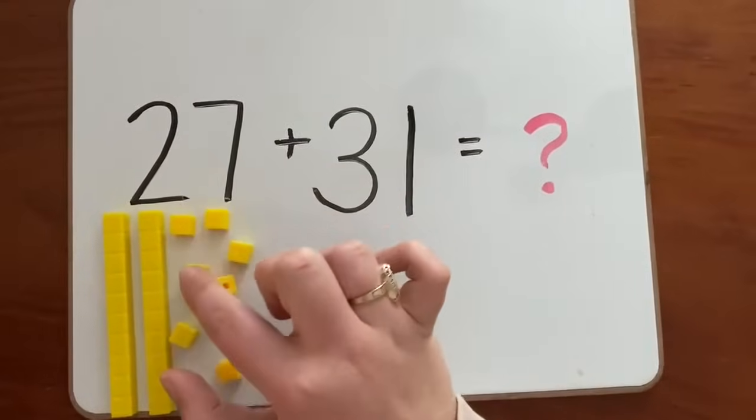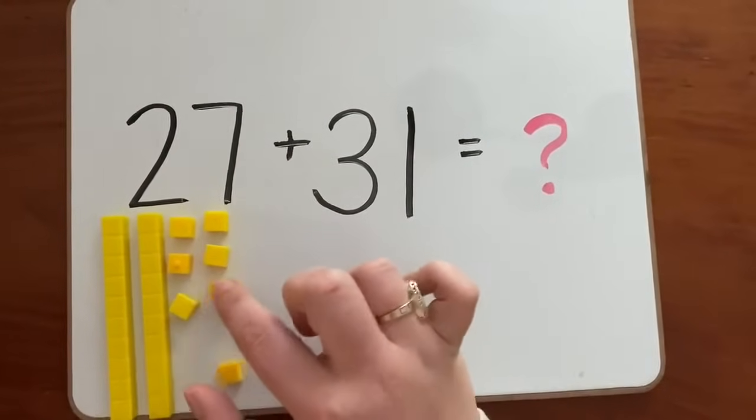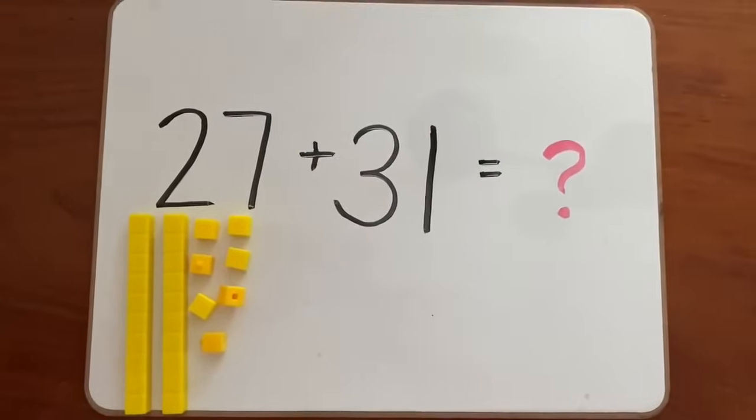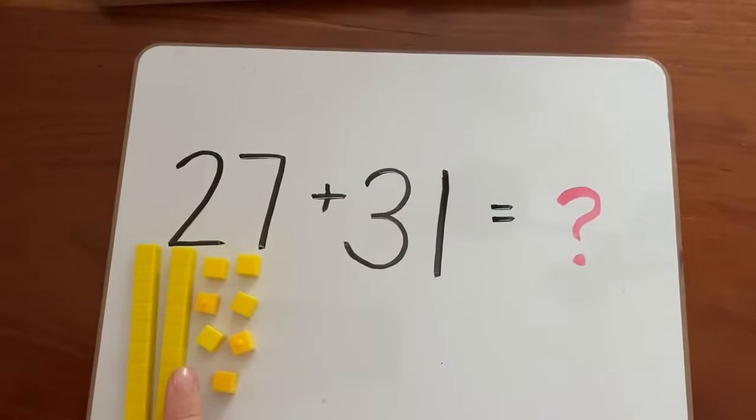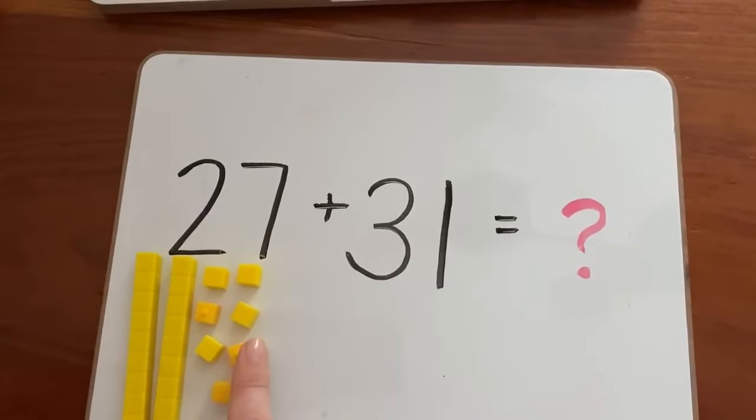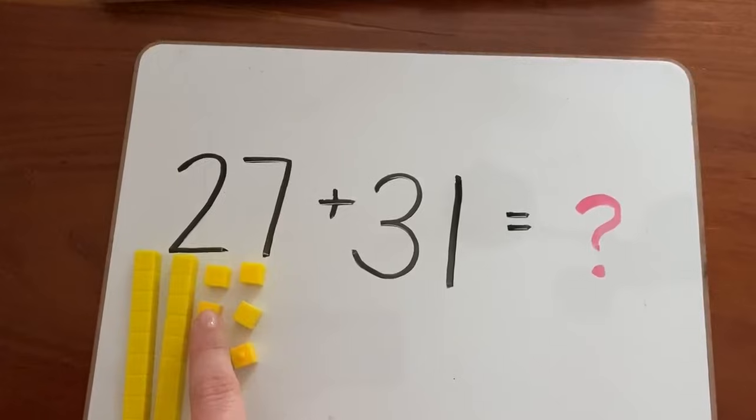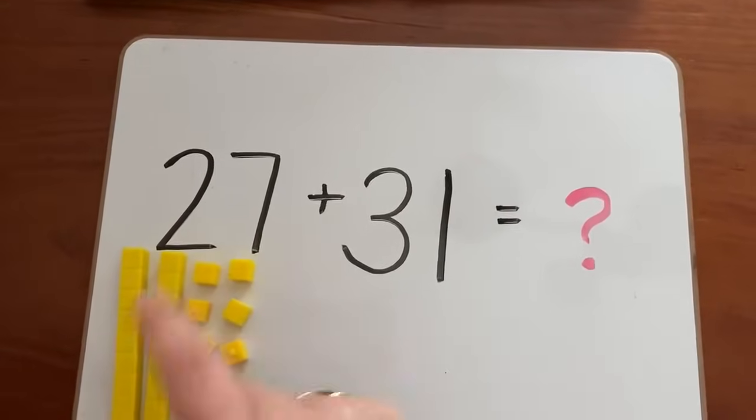1, 2, 3, 4, 5, 6, 7. We made the number 27. Let's verify: 10, 20, 21, 22, 23, 24, 25, 26, 27.